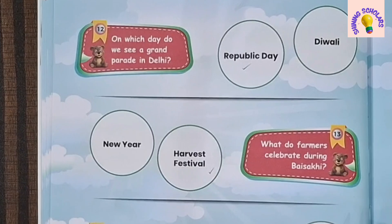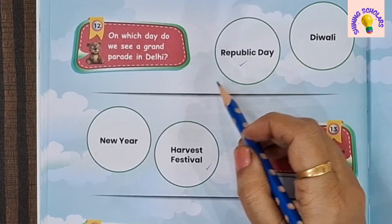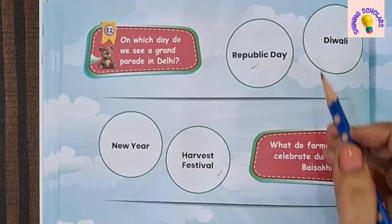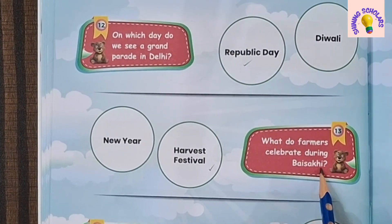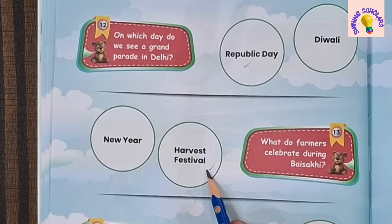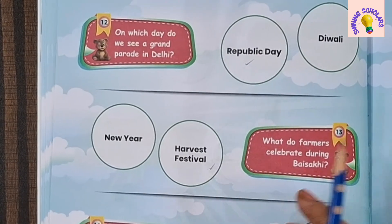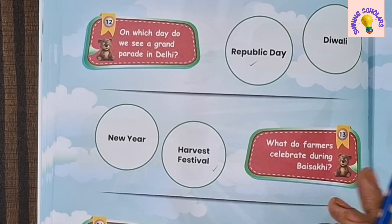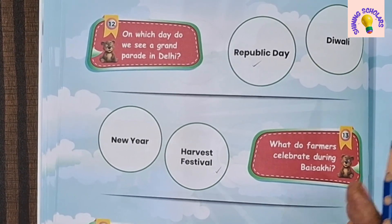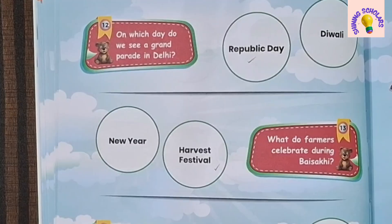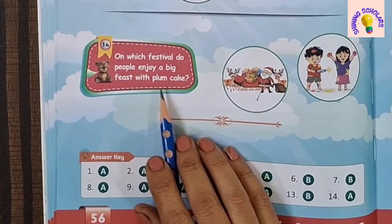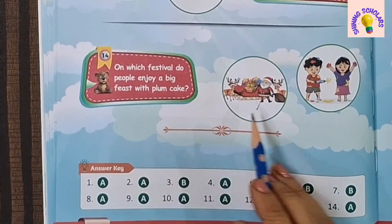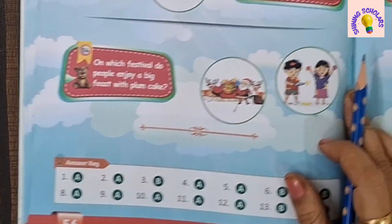On which day do we see a grand parade in Delhi? Republic Day. What do farmers celebrate during Baisakhi? It's a harvest festival — in Baisakhi, farmers are harvesting crops, meaning cutting crops. On which festival do people enjoy a big feast with plum cake? Christmas Day.